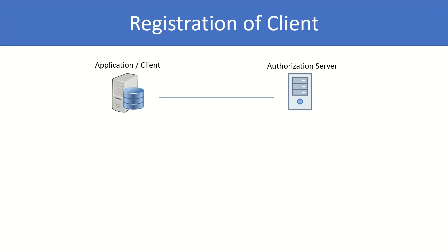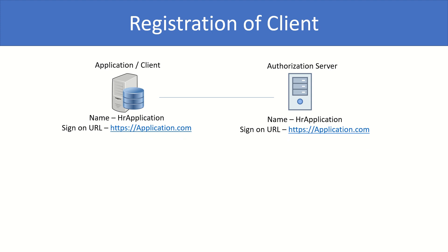When you are designing an application, there are common attributes like the name of the application and the sign-in URL. Similarly, the authorization server also needs some information to know your application. For example, you fill in a registration form on the authorization server with the application name — say, HR application — and the sign-in URL, like stdpsapplication.com. Once the registration is complete, the authorization server creates a client ID specific to your application, so it can confirm that a legitimate request has been received from a known application.